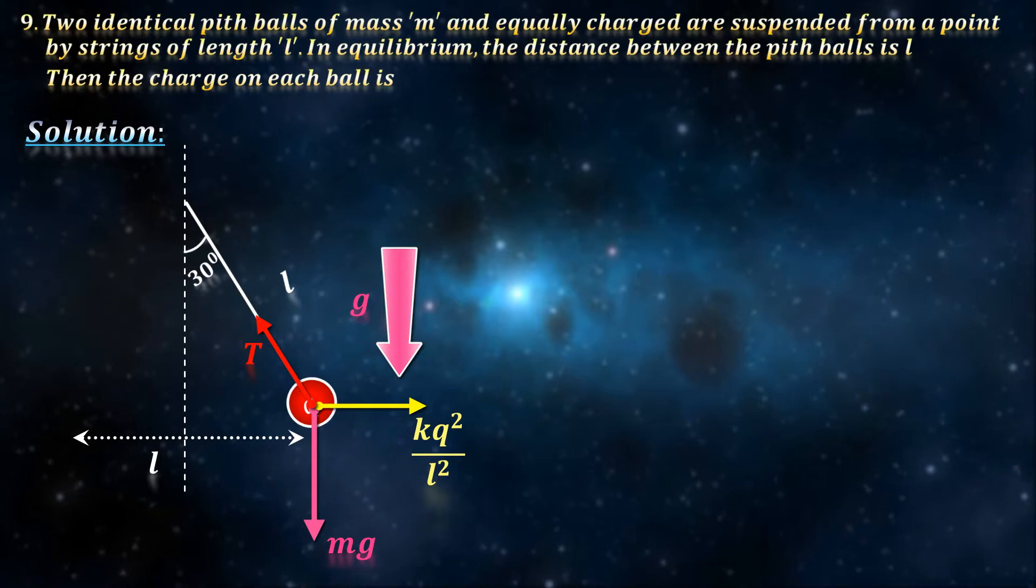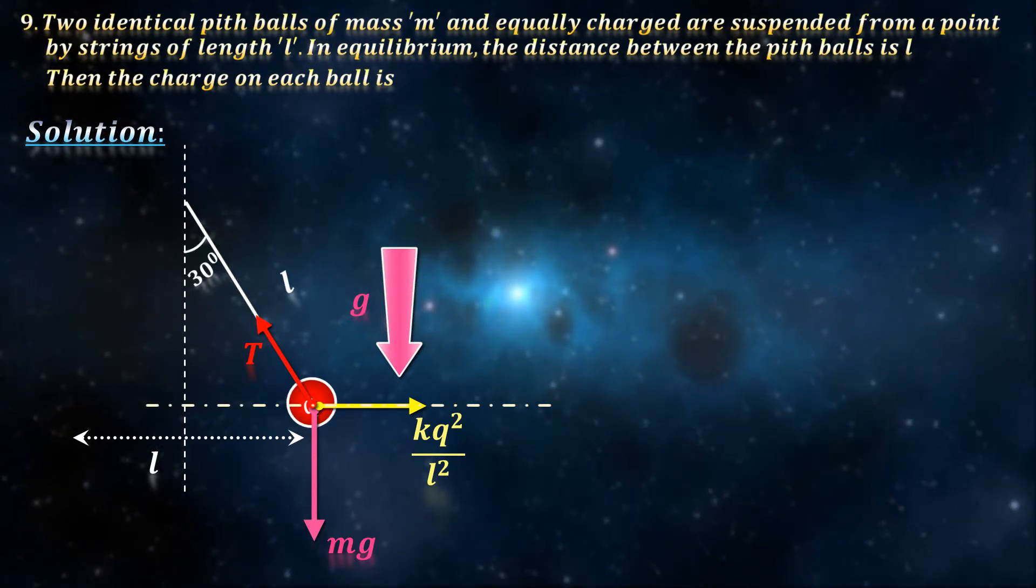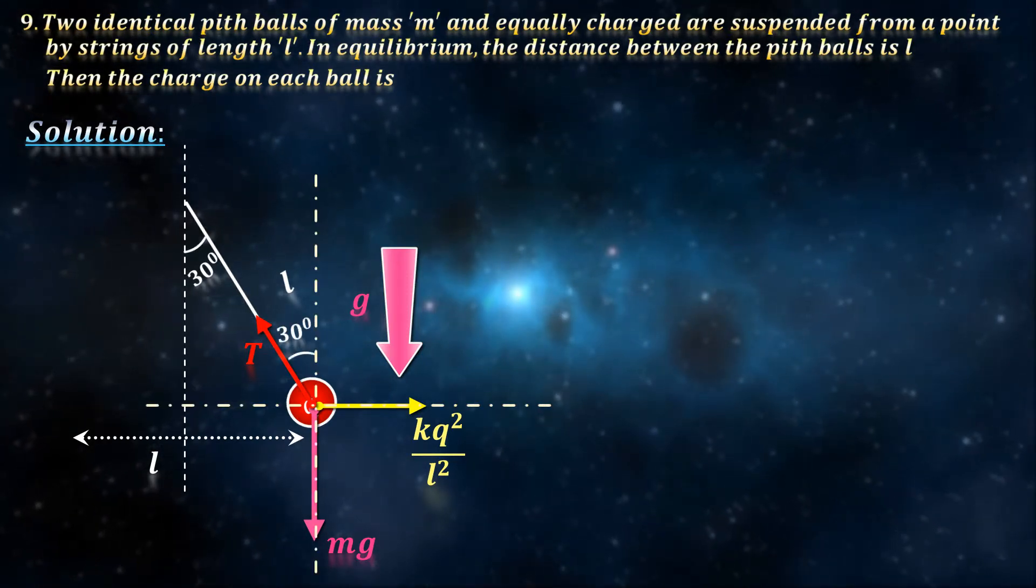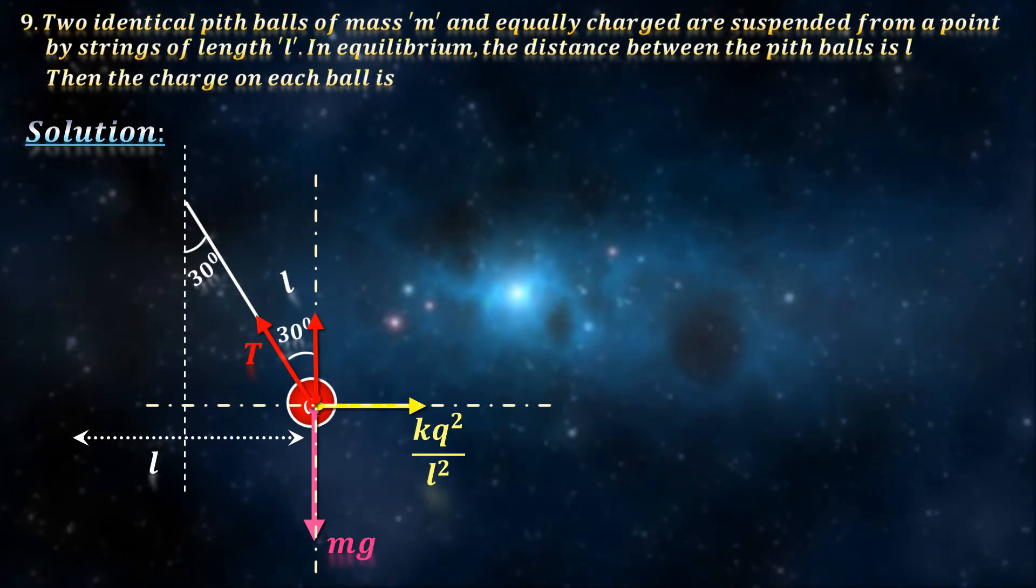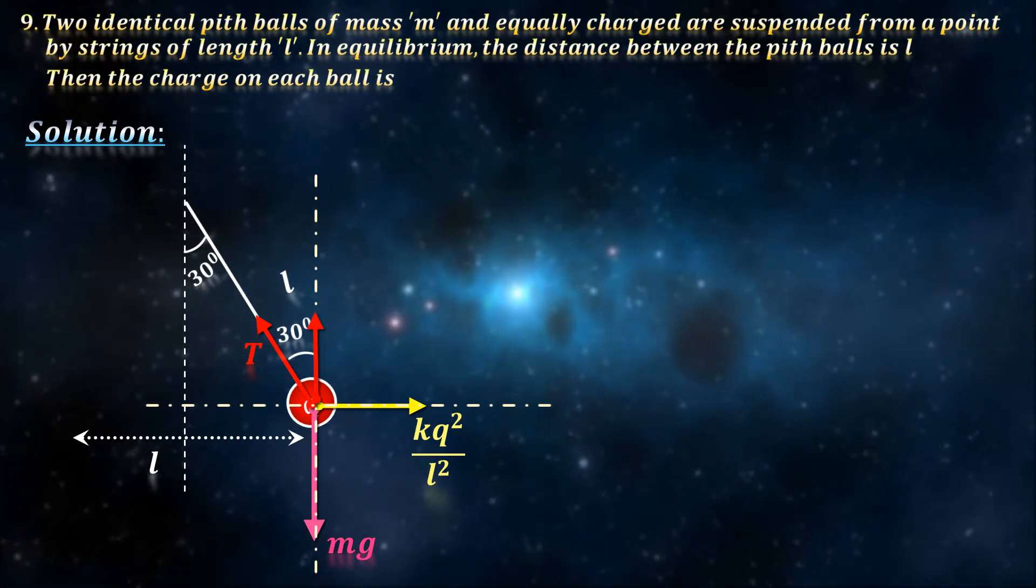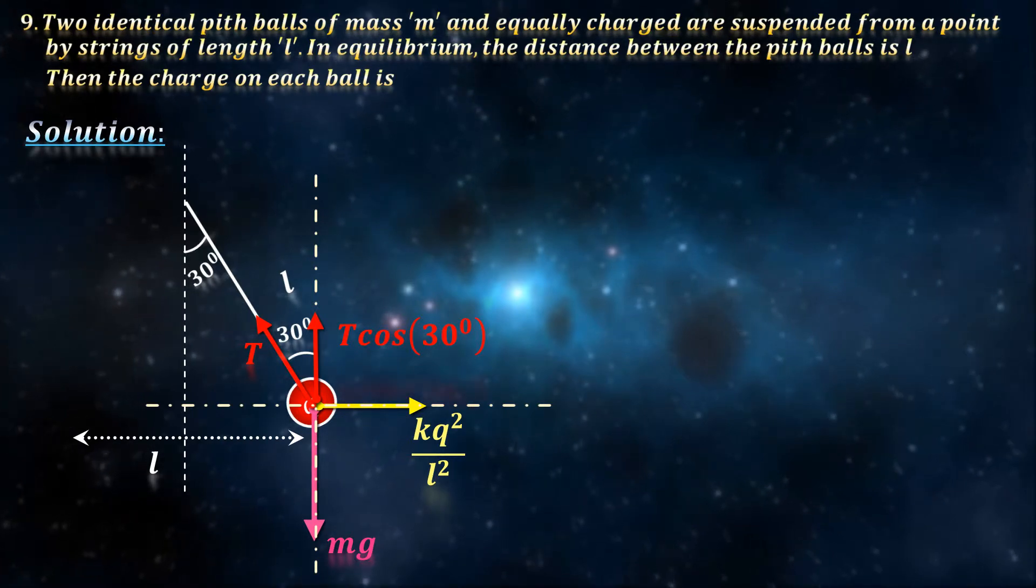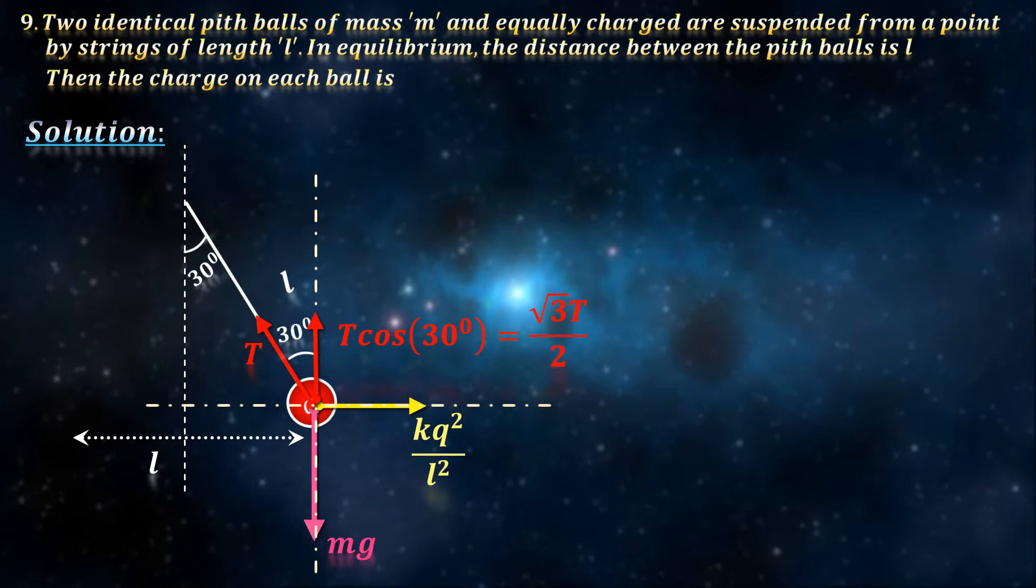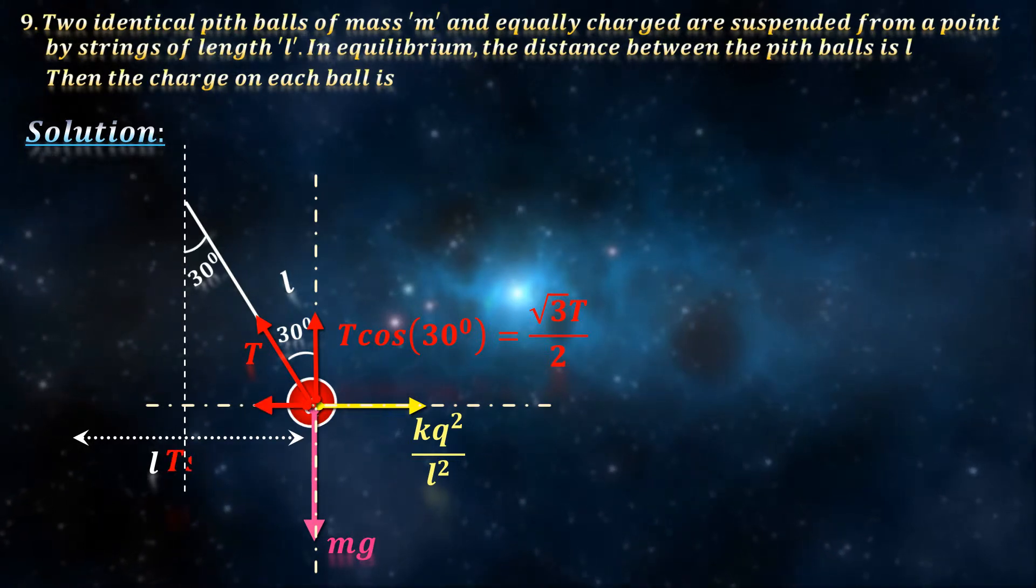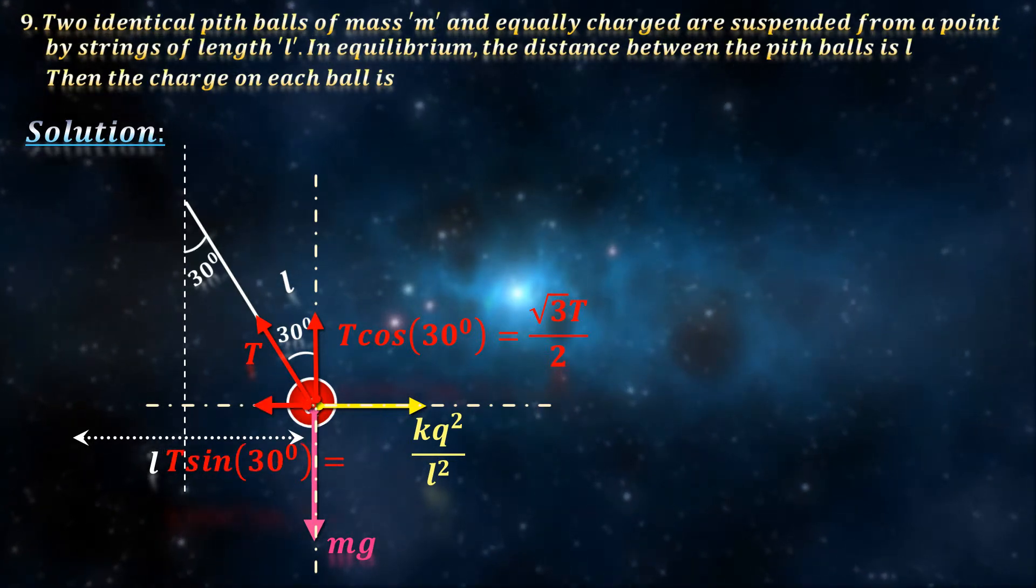So, one way to solve these is by resolving along the horizontal and vertical. The component of the tension along the vertical, along 30 degrees, is T cos 30, which is root 3 by 2 T, and along the horizontal is T sin 30, which is T by 2.